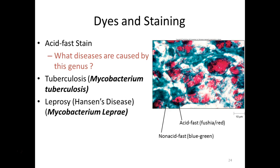Most people's immune systems can clear Mycobacterium leprae, but it seems to run in families because a genetic defect preventing immune clearance is heritable. If you live in the same environment and one person is susceptible, another family member with the same defect will likely get it too. In Louisiana, armadillos are carriers. This is immunologically fascinating — why one person gets sick and another doesn't comes down to differences in genetics and immune function.